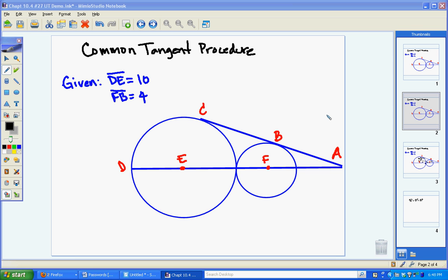So the first thing we want to do is we want to draw a segment joining the centers and you can see that that's already drawn. So from the center of circle E to F we've already drawn that line.